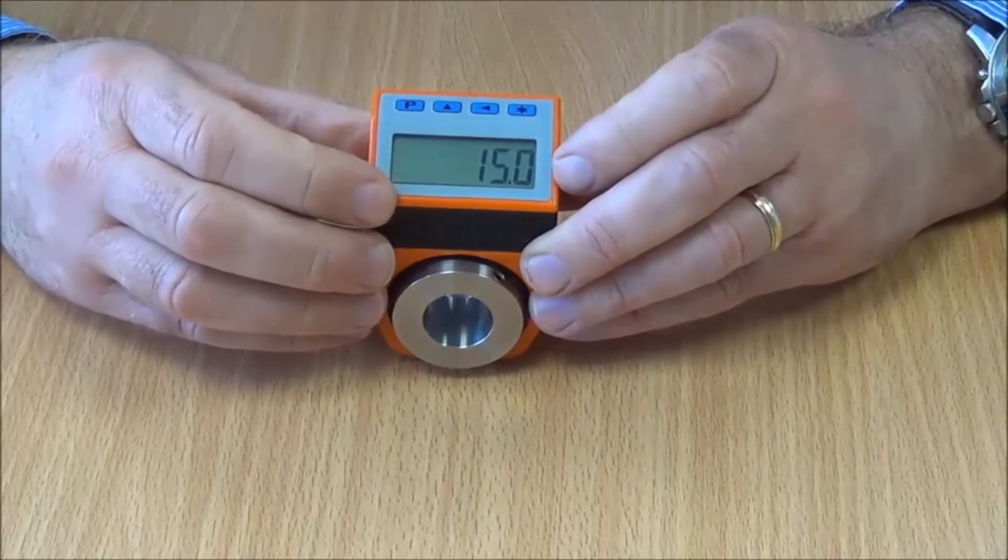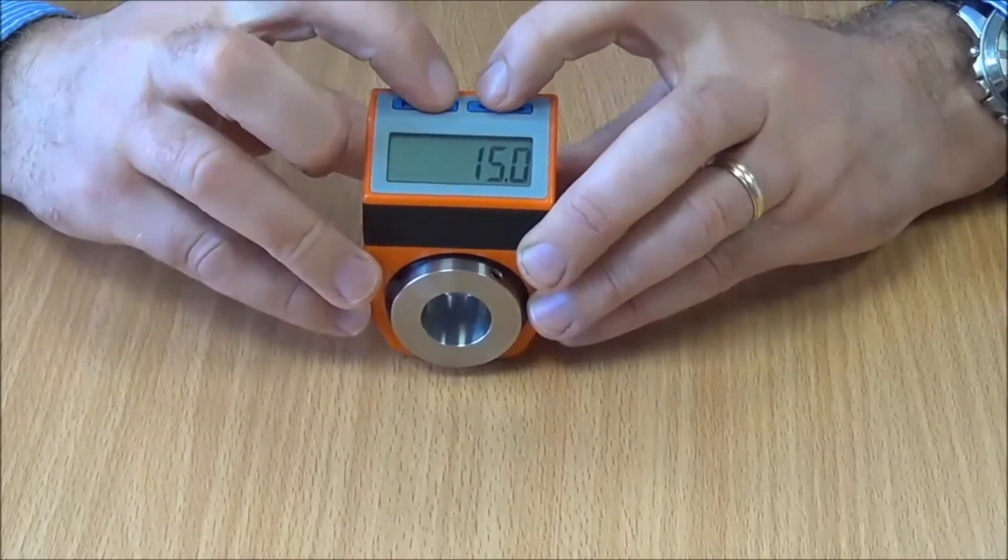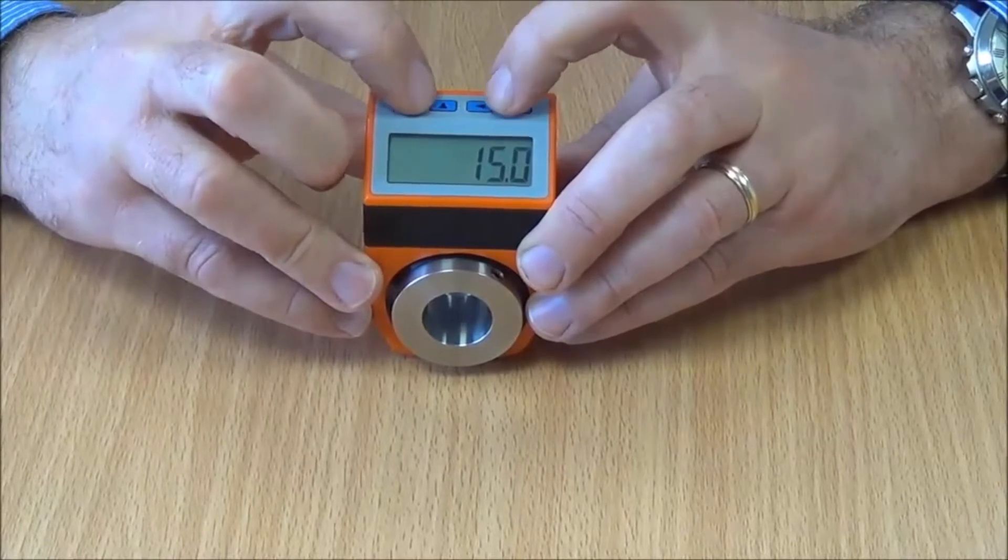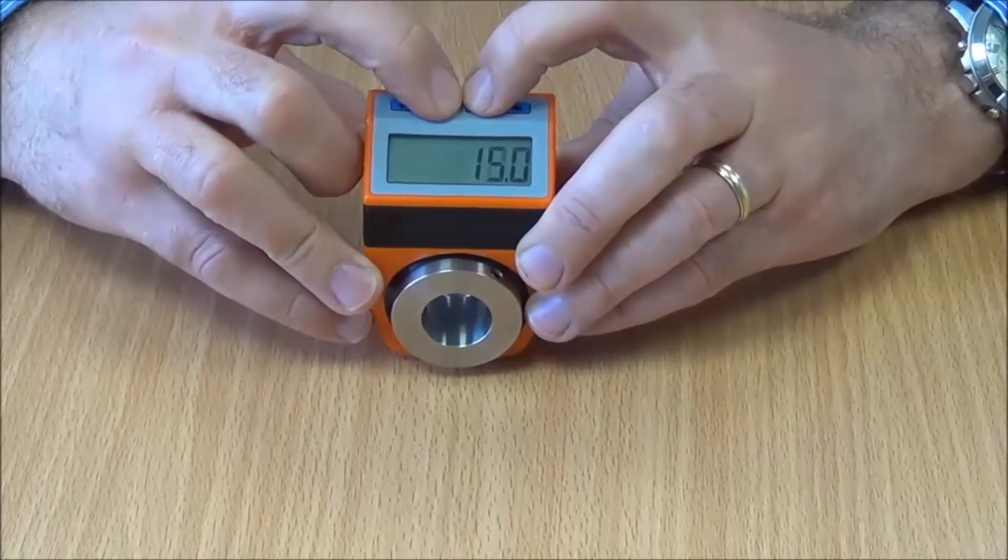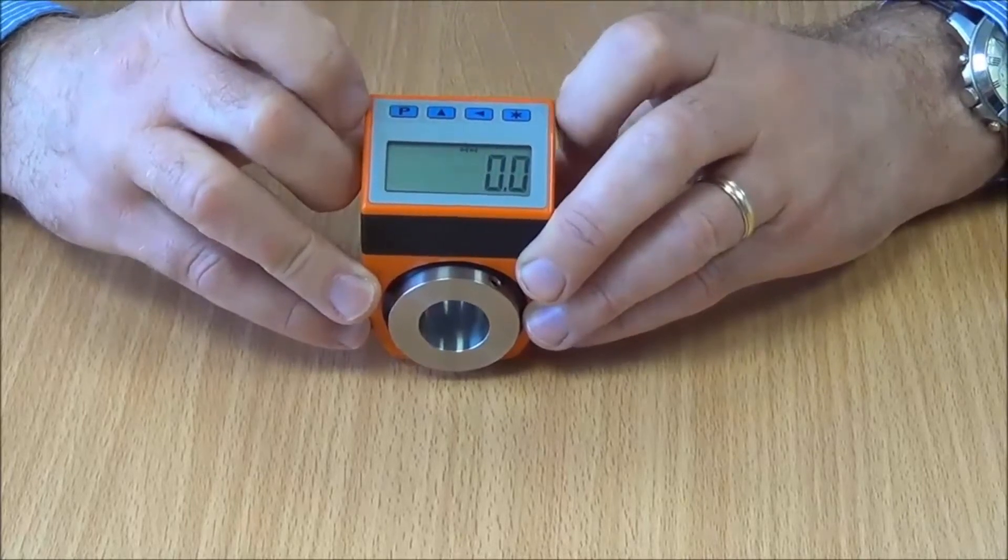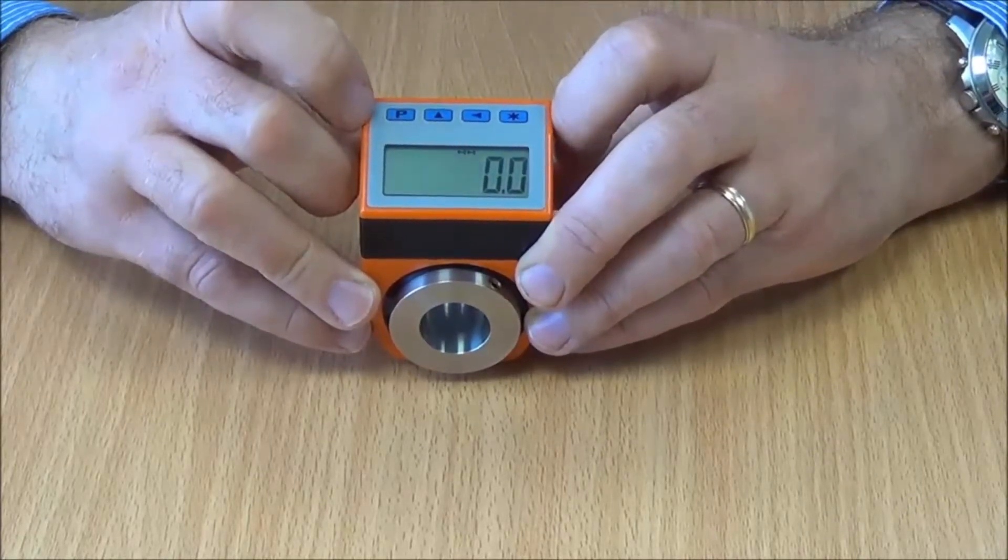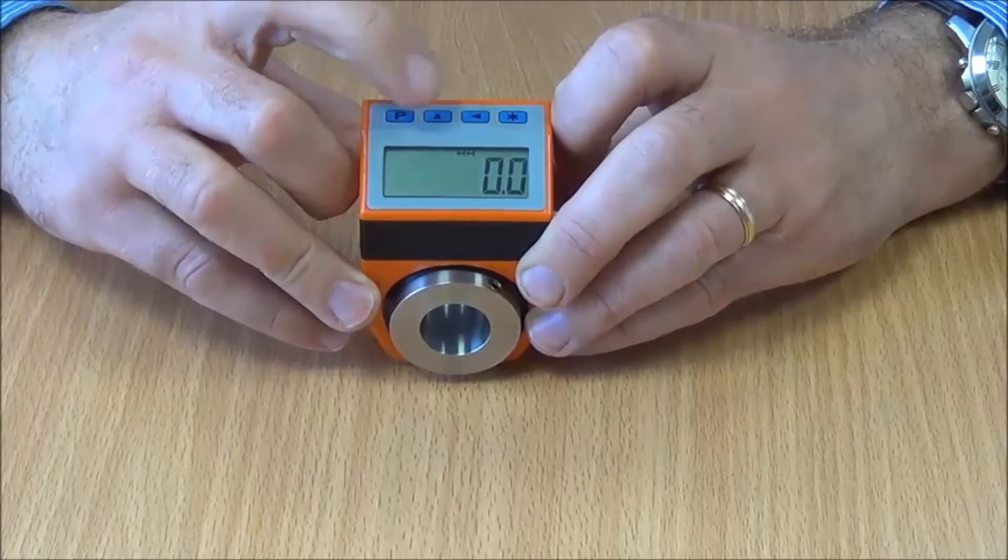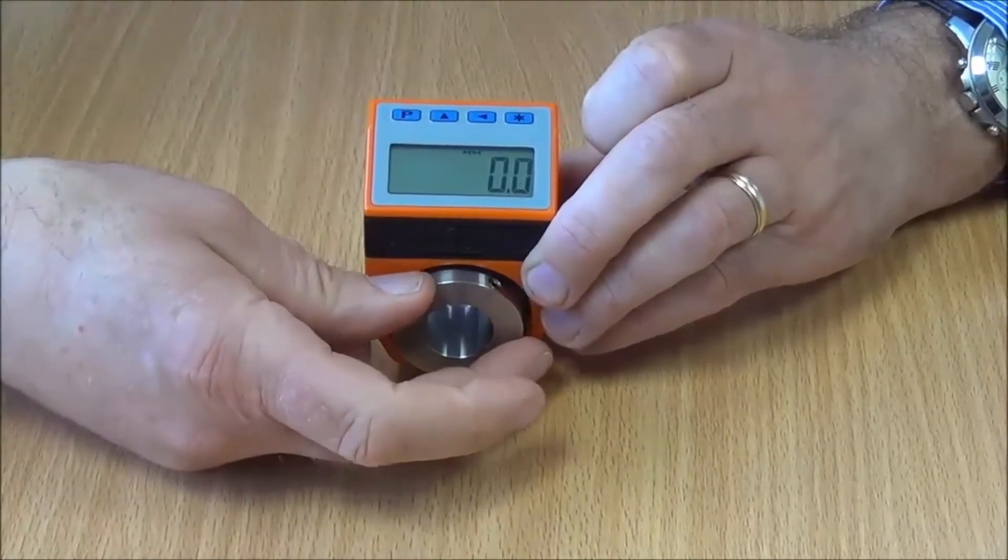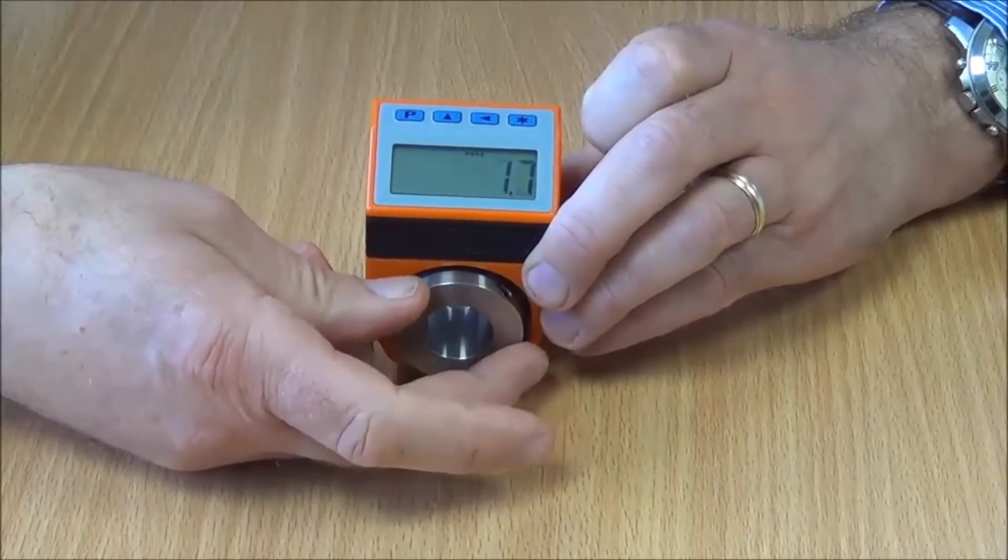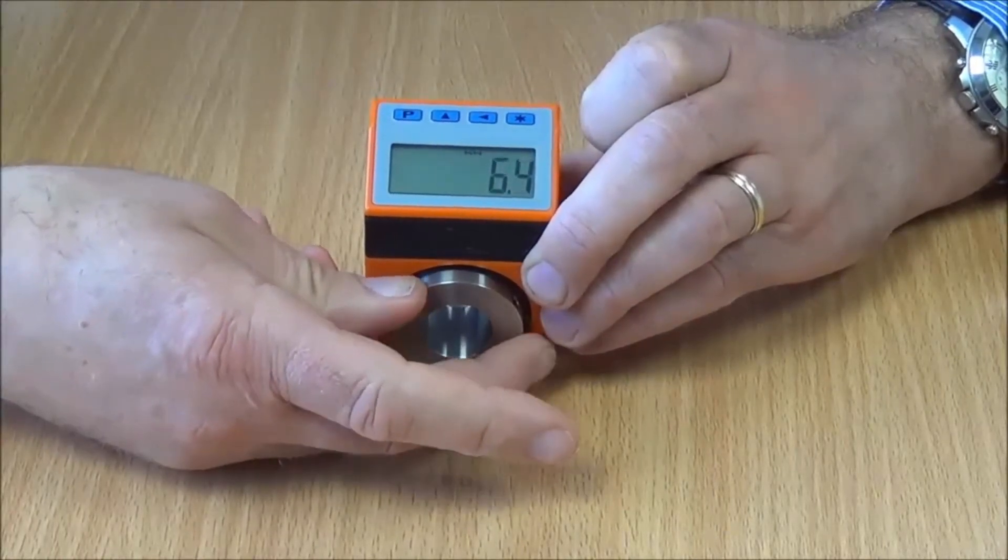15 millimeters. So if we then press the arrow up and arrow across button together, we then zero the display in relative or incremental mode, and you should be able to see the arrows there as well. Then we can move, say for example, another 10 millimeters.